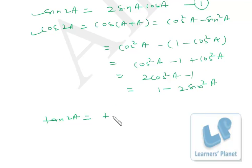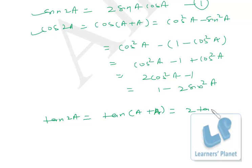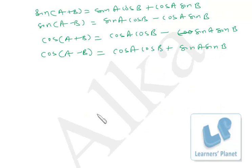We have derived the formula for tan 2A. If you put A instead of B in the tan(A+B) formula, you get tan 2A = 2 tan A / (1 − tan²A). Similarly you can derive the formula for cot 2A. Generally sin 2A, cos 2A, and tan 2A are very common, so you must know these relationships.